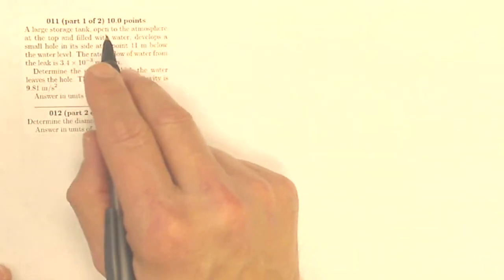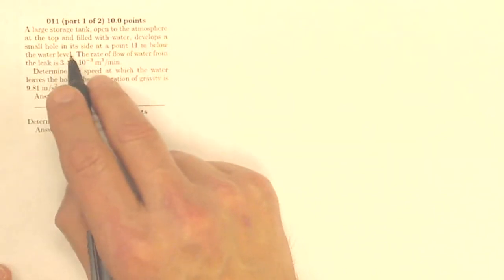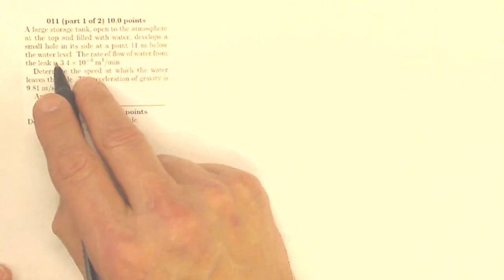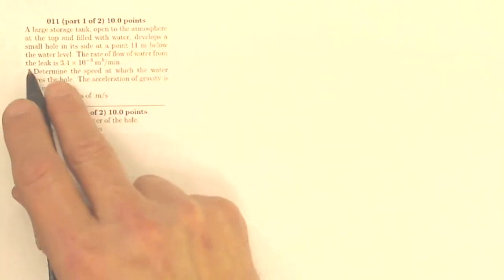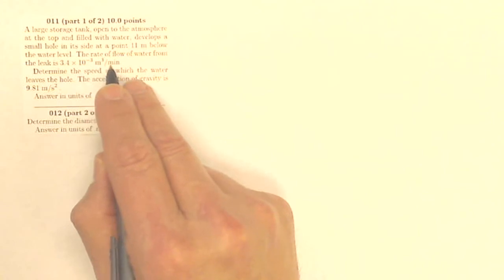This is Mr. Beck Does Your Homework. This is AP Physics homework 7.3, question number 11 and 12. A large storage tank open to the atmosphere at the top and filled with water develops a small hole in its side at 0.11 meters below the water level. The rate of flow of water from the leak is 3.4 times 10 to the minus third cubic meters per minute.